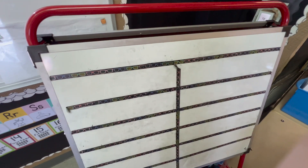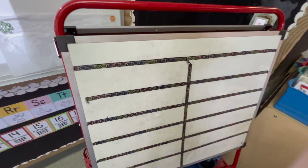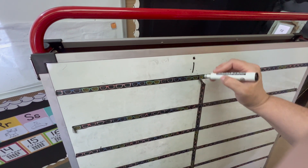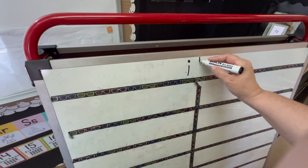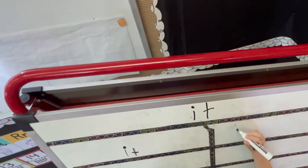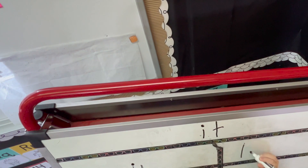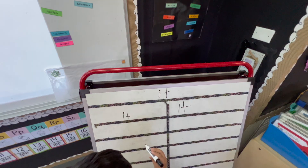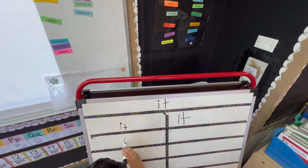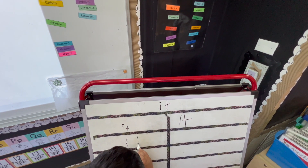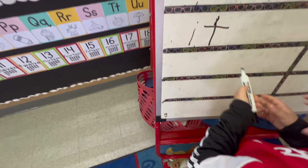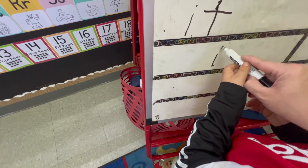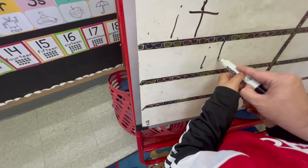We are going to write the word 'it.' We do a little i with a small dot on top and a tall t. Students take turns at the easel: small i, little dot, and tall t.